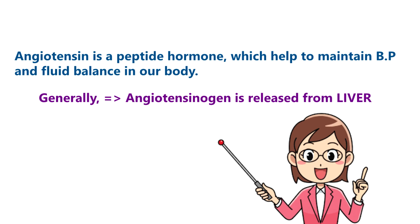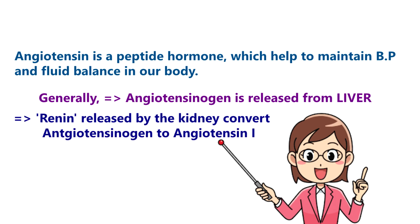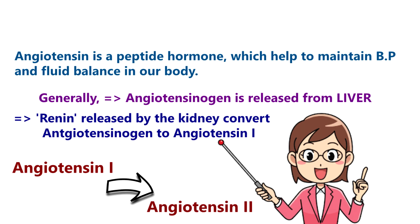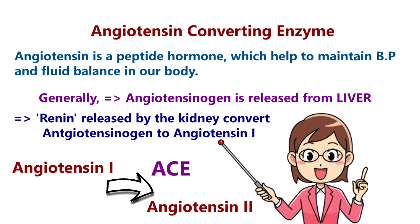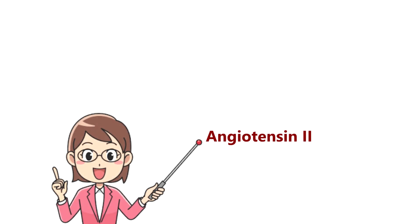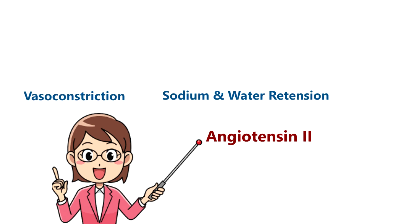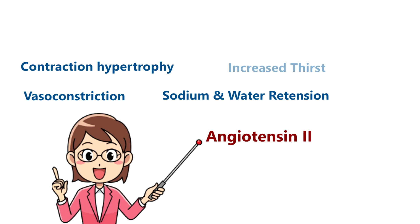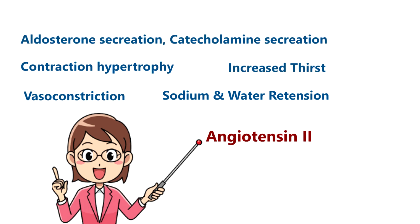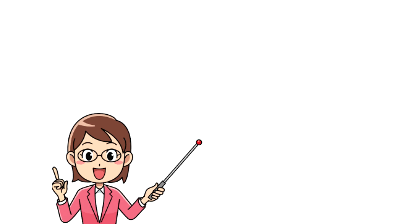Generally, the liver produces angiotensinogen. The kidney releases renin. Renin converts angiotensinogen to Angiotensin 1. Angiotensin Converting Enzyme (ACE) then converts Angiotensin 1 to Angiotensin 2. Angiotensin 2 causes vasoconstriction, sodium and water retention, cardiac contraction hypertrophy, increased thirst, aldosterone secretion, and catecholamine secretion.